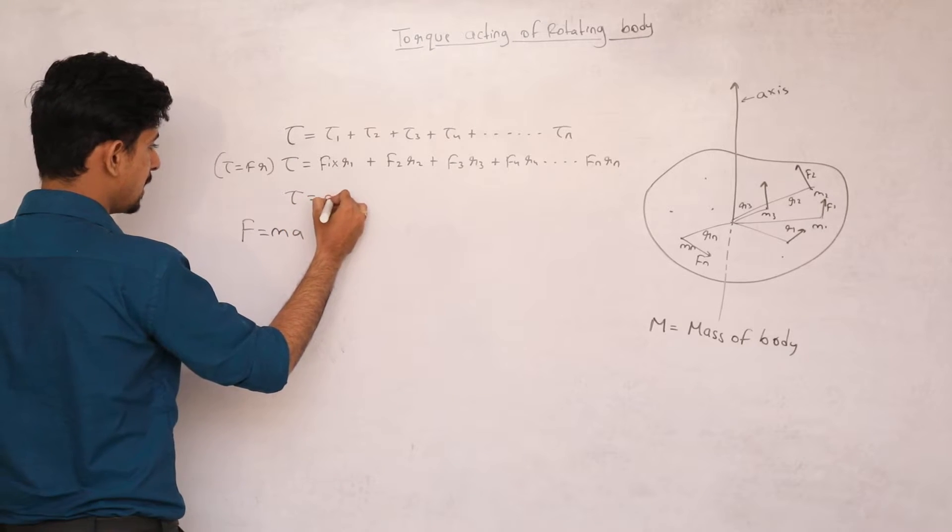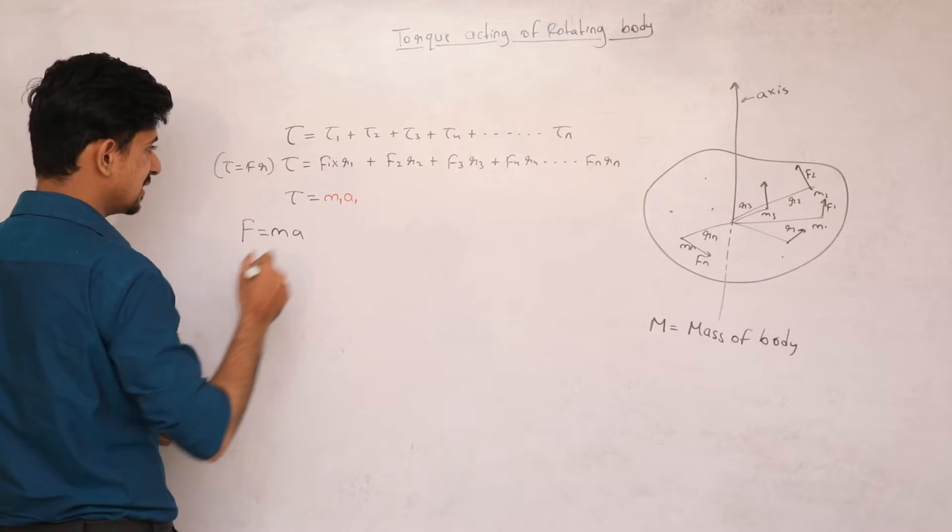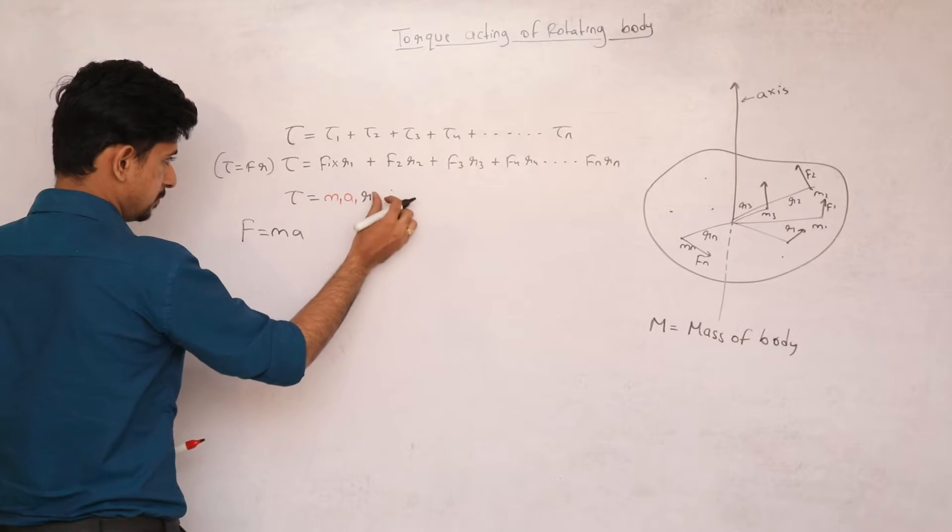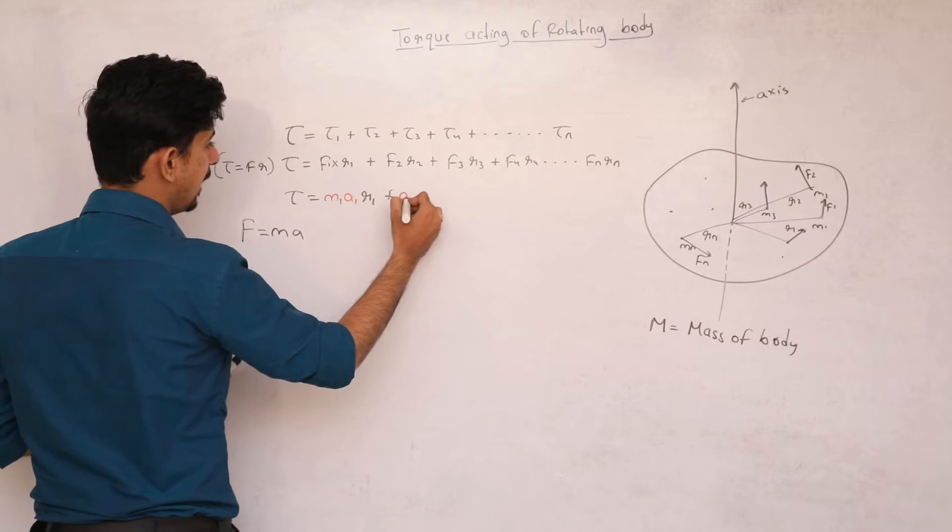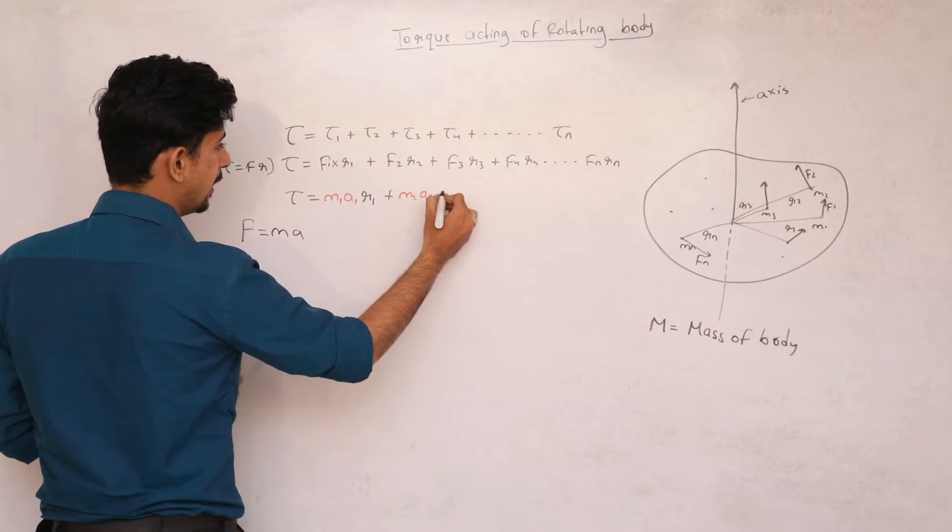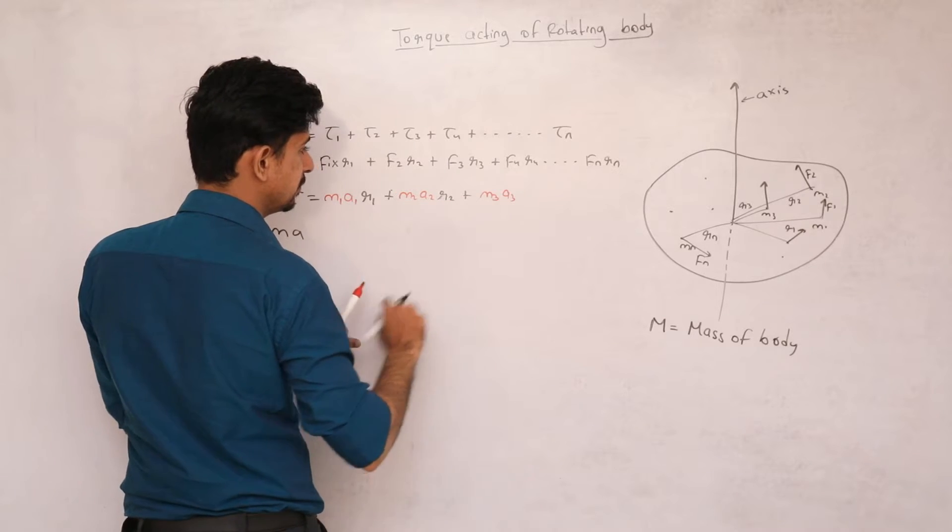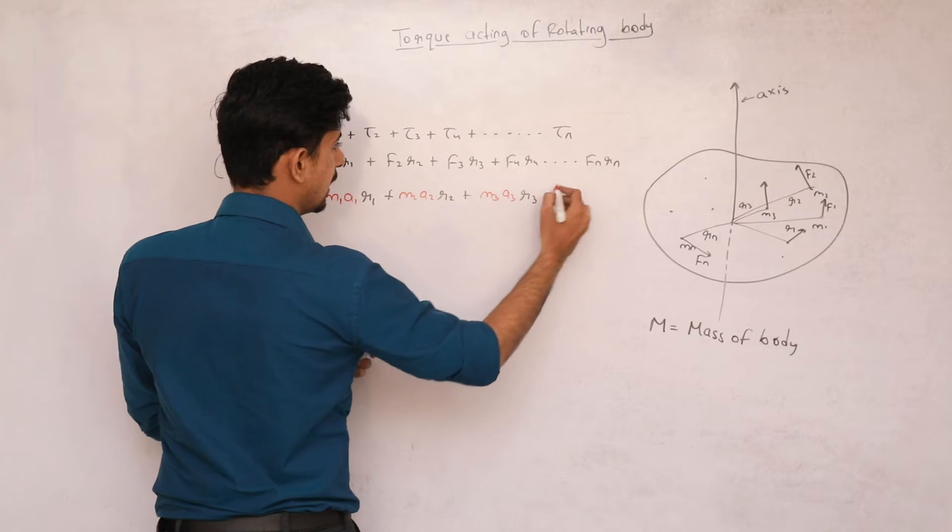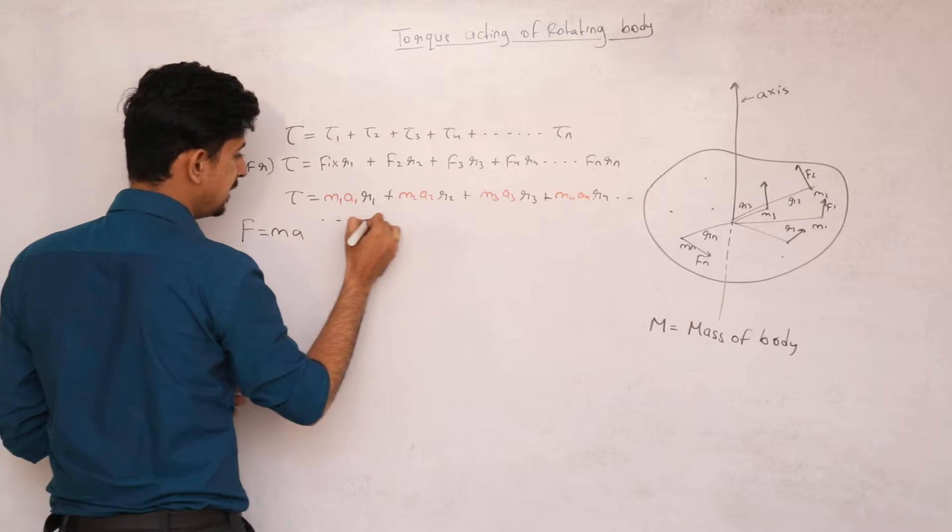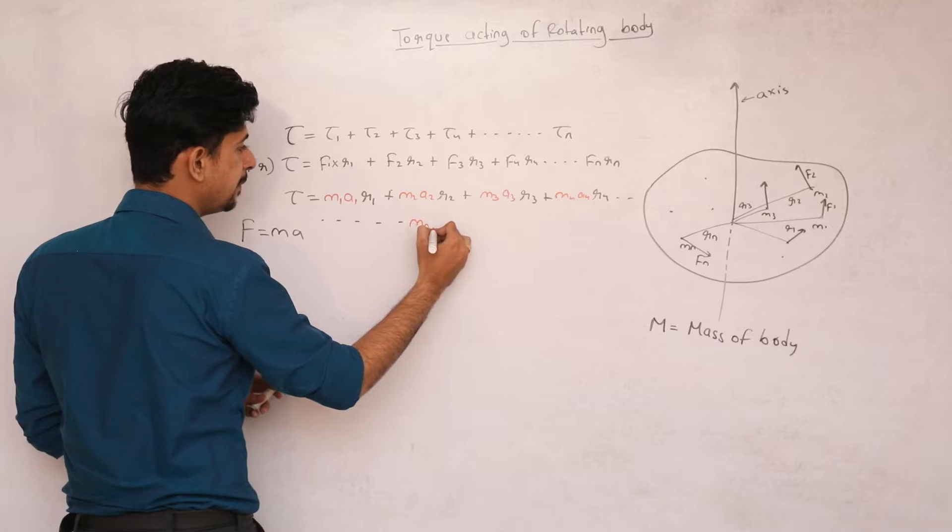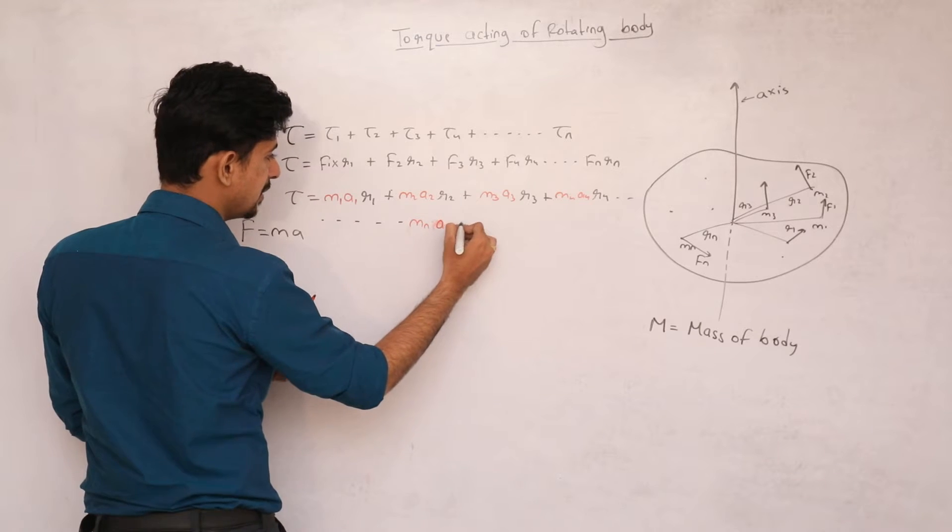So here, the total torque equals force as mass into acceleration. For F1, we get m1·a1·r1. For the second one, we get m2·a2·r2. Plus m3·a3·r3, plus m4·a4·r4, and this continues. Finally, for your last particle, we replace its force with mn·an·rn.